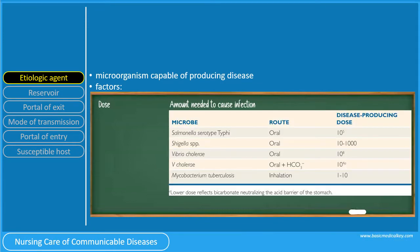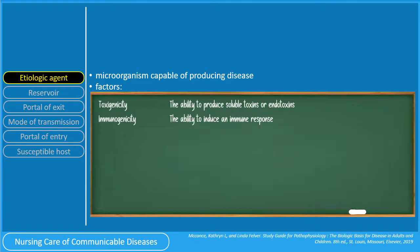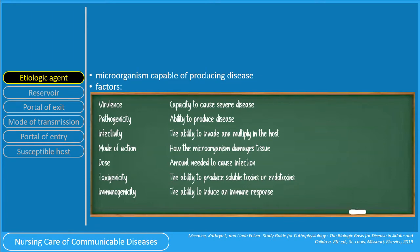The dose is the amount of microorganism needed to cause an infection. In this table, you can see that 1 to 10 Mycobacterium tuberculosis cells is sufficient to cause TB. You can observe the huge difference in the infective dose of Salmonella and Shigella. Since Shigella is resistant to gastric acids, a very small inoculum is required. For Salmonella, a large inoculum is required because the organism is inactivated by gastric acids. The ability to produce soluble toxins or endotoxins is referred to as toxigenicity, while the ability to induce an immune response is referred to as immunogenicity. This slide summarizes the factors we discussed.